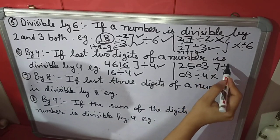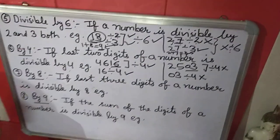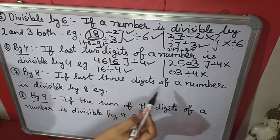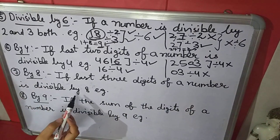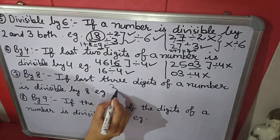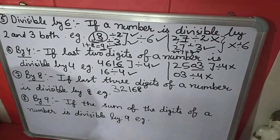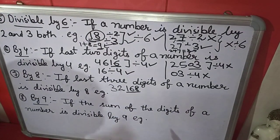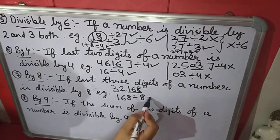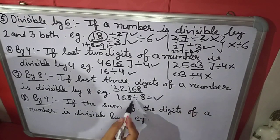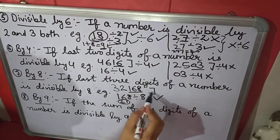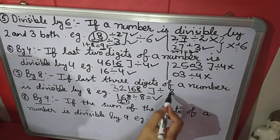Next, the 7th rule is divisibility by 8. If the last 3 digits of a number are divisible by 8, then the complete number is divisible by 8. Example: 32,168 — we take the last 3 digits: 1, 6, 8 — that is 168. We check if 168 is divisible by 8: yes, it is divisible by 8. So this complete number is divisible by 8.